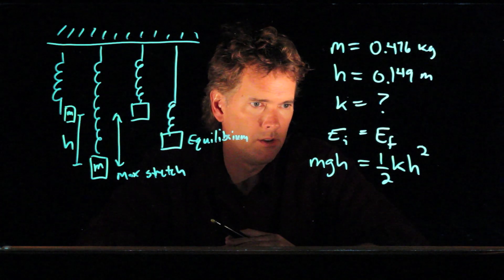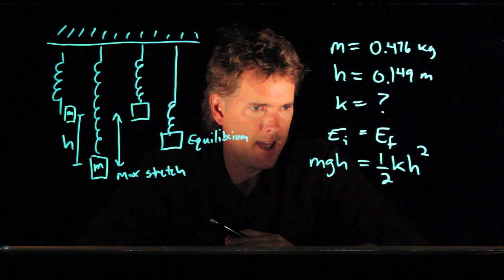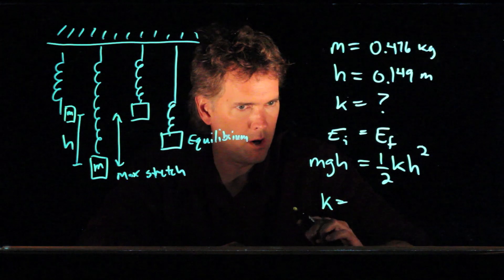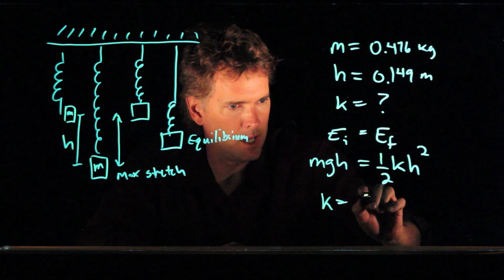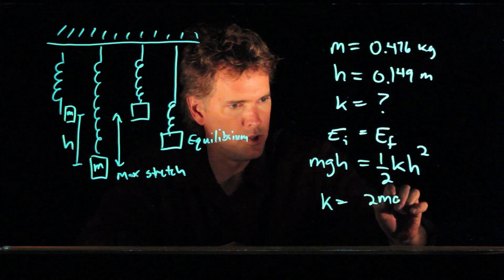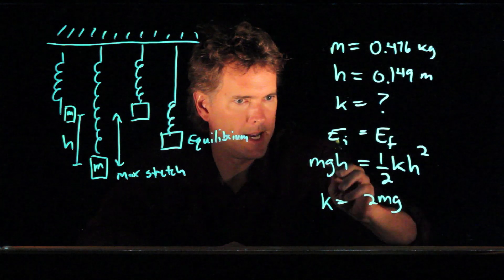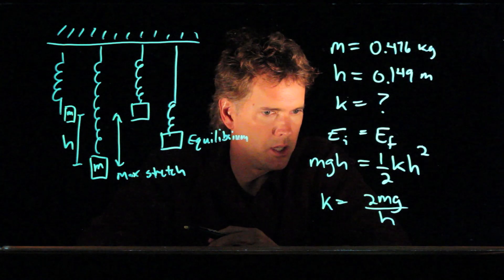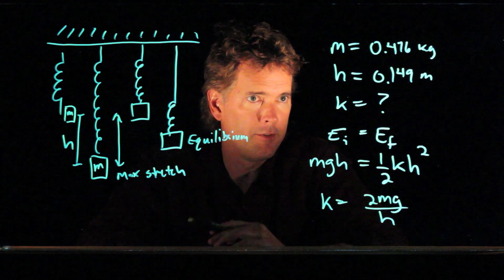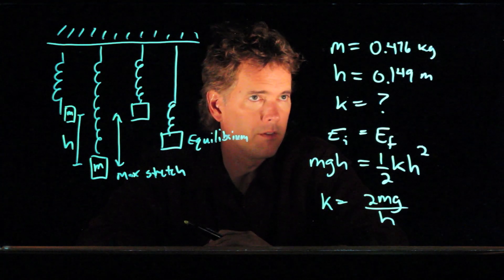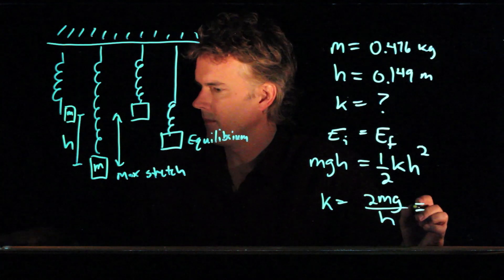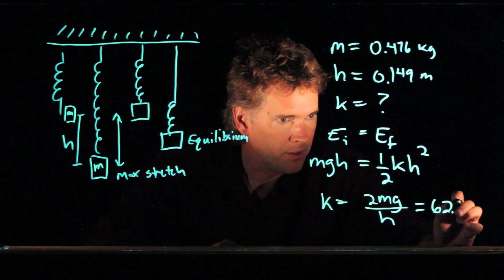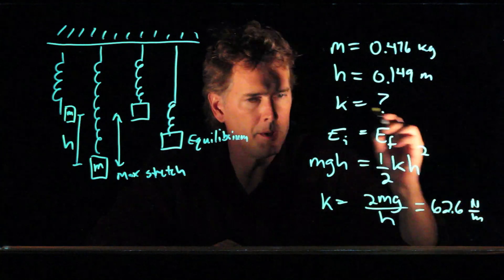We can solve this last equation for k. What do we get? We get k equals, we multiply across by 2, and we get 2mg. And then we had an h, but we're going to divide by an h squared. And so we get an h in the denominator. And if you plug in those numbers, you should get 62.6 newtons per meter.